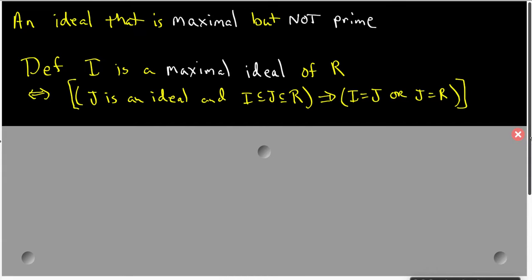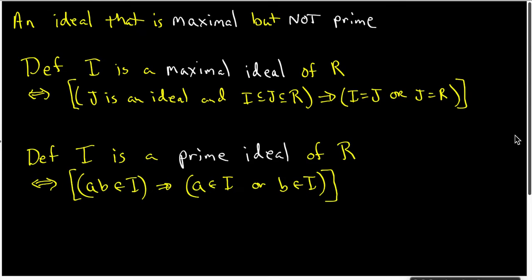The definition of a prime ideal, on the other hand, is defined in terms of products that belong to the ideal. An ideal I is a prime ideal of R if and only if the product AB belonging to I implies that one of the two factors has to belong to I. In other words, AB in I implies either A in I or B in I.